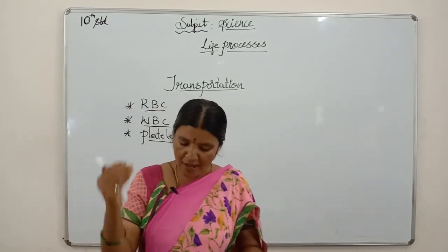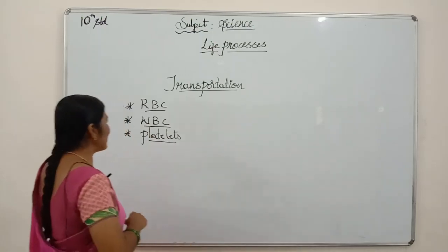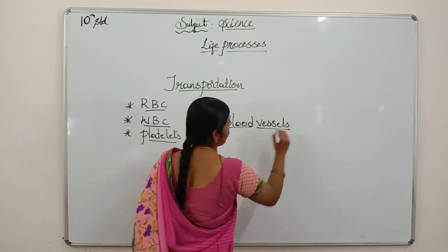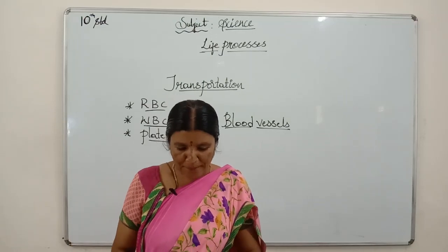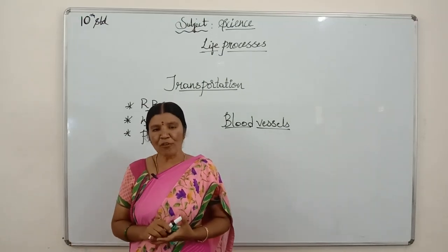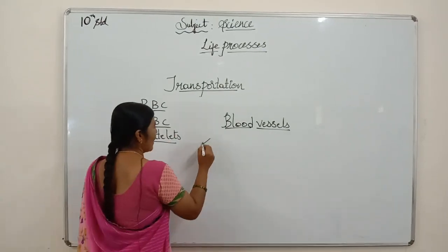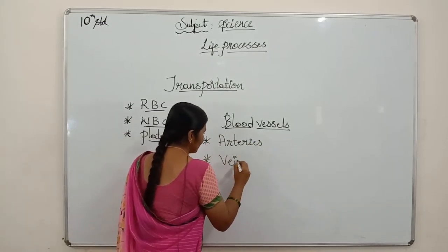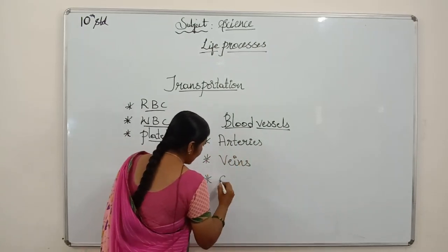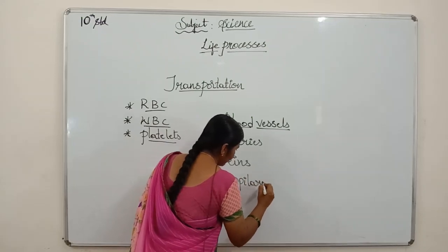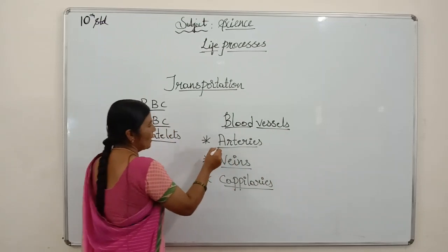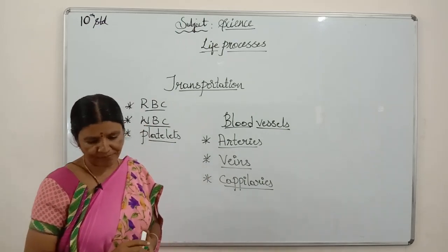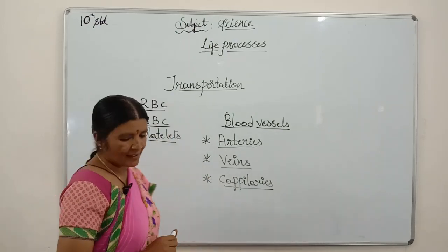Before going to heart, let us learn about blood vessels. There are three types of blood vessels: firstly arteries, secondly veins, and thirdly capillaries.